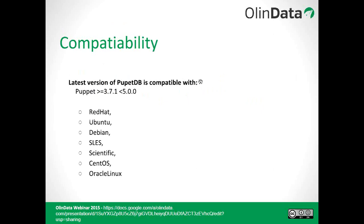Here I have shown the compatibility of PuppetDB. The latest version of PuppetDB is compatible with Puppet versions in the range of 3.7.1 to less than 5. The operating systems supported are listed here: Red Hat, Ubuntu, Debian, Cisco Linux, Scientific, CentOS, and Oracle Linux as well.